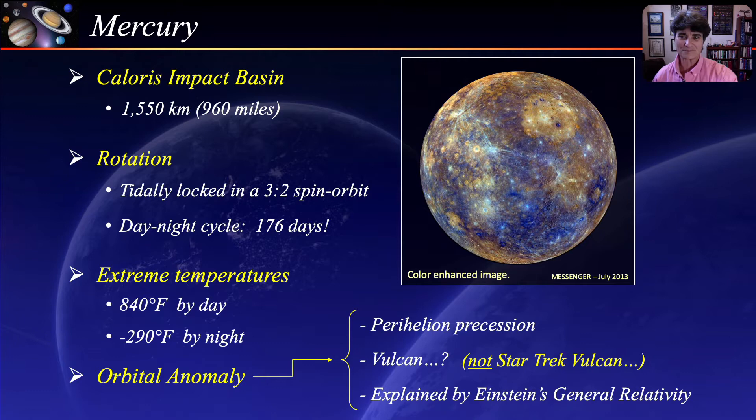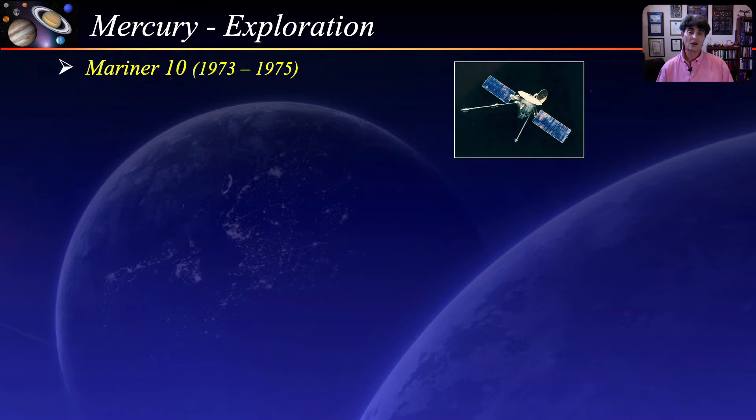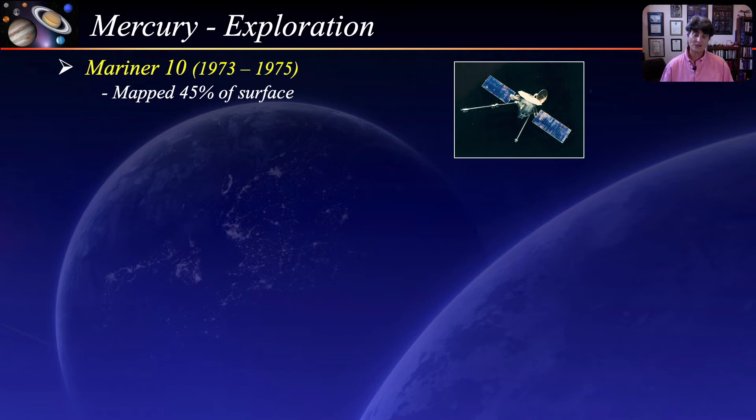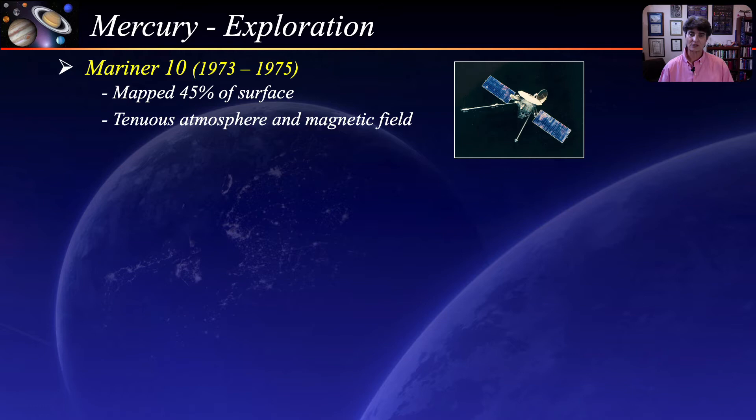The first spacecraft to visit Mercury was Mariner 10 from 1973 to 1975. Its mission was to measure Mercury's environment, atmosphere, surface, and body characteristics. During its three flybys, it was able to map about 45% of the surface. It discovered Mercury's very tenuous atmosphere consisting mainly of helium, as well as its very weak magnetic field and large iron-rich core.